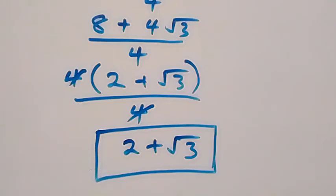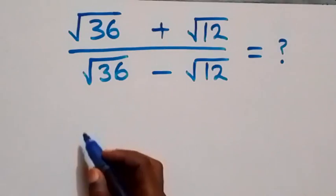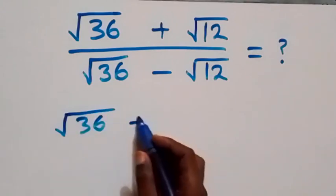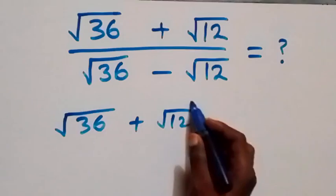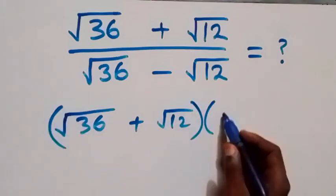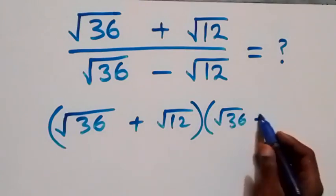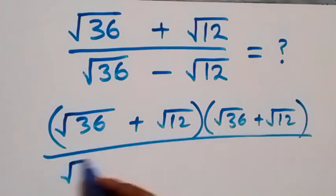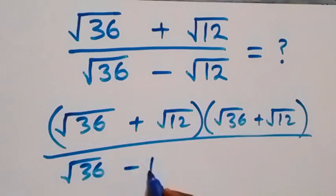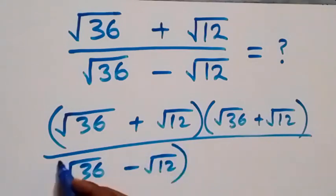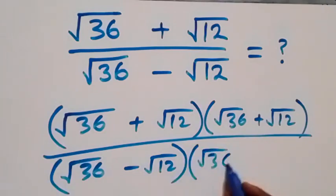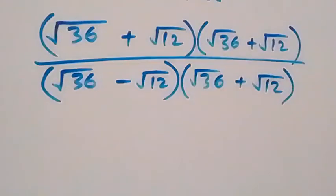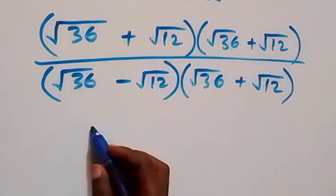Now let's use the second method. We rationalize directly by multiplying by the conjugate. The expression becomes (root 36 plus root 12) times (root 36 plus root 12) in the numerator, and (root 36 minus root 12) times (root 36 plus root 12) in the denominator.